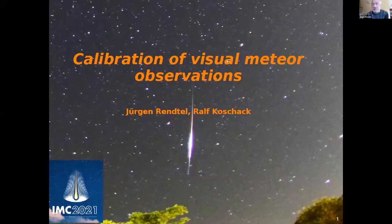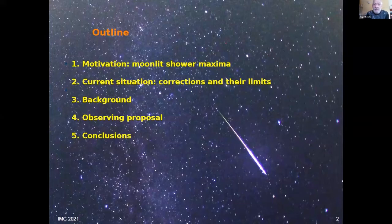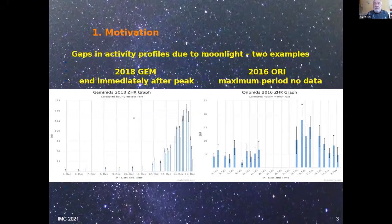This talk continues from Philip's presentation in the sense that we dealt with the problem of how to handle observations under very bad conditions. Here you see the motivation to do moonlit shower maxima observations. I will briefly describe the current situation and some background on how this all works together, then come up with an observing proposal, and hopefully some people will participate.